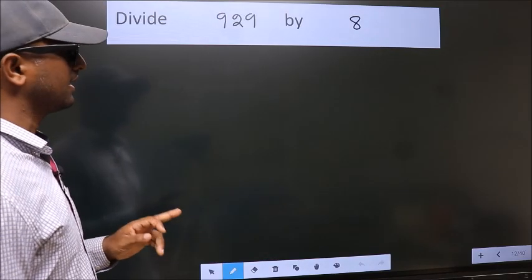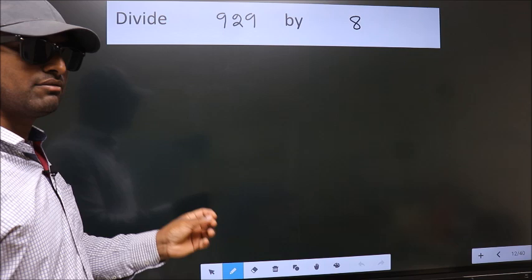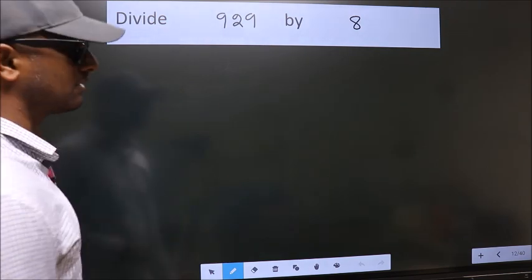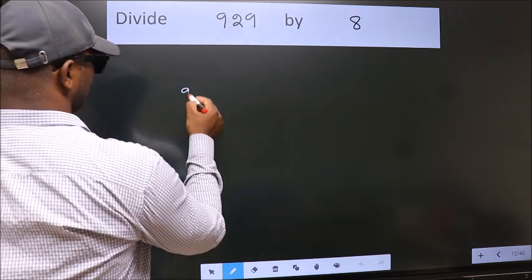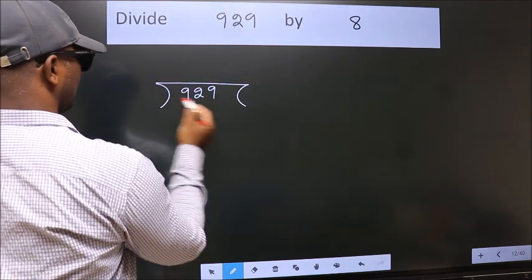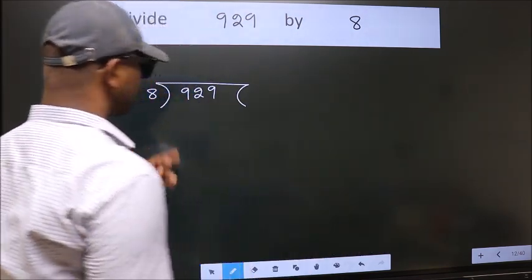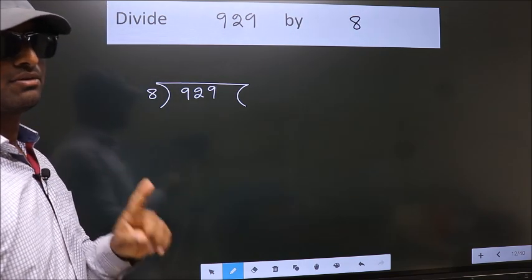Divide 929 by 8. To do this division, we should frame it in this way. 929 here, 8 here. This is your step 1.